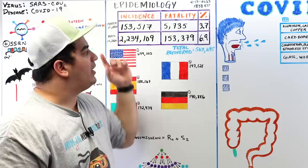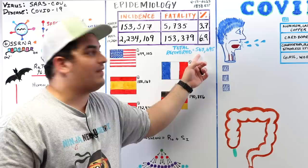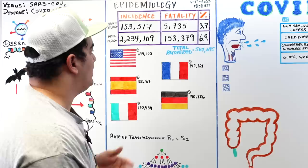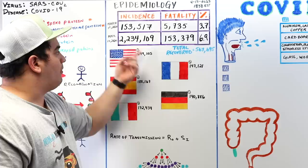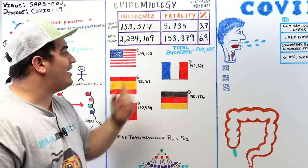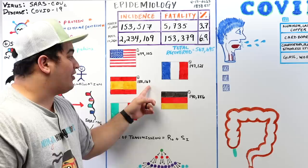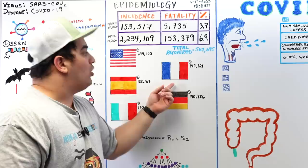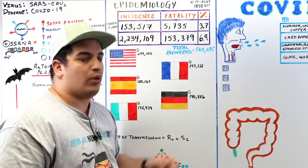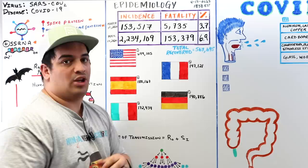On a positive note, global recovery cases stand at 567,695 individuals. Looking at specific countries: the USA leads with 699,105 cases, followed by Spain with 188,167, Italy with 172,434, France with 147,121, and Germany with 140,886 total cases.